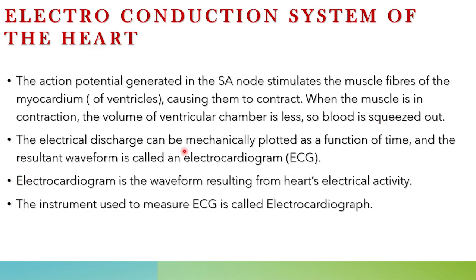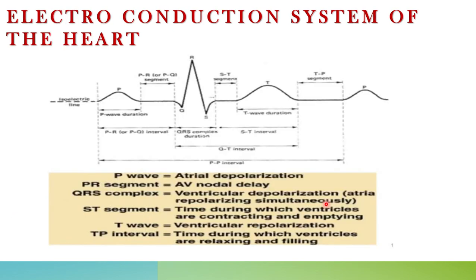The electrical discharge can be plotted as a function of time, and the resultant waveform is called an electrocardiogram. The instrument used to measure ECG is called an electrocardiograph. The electrocardiogram is the waveform resulting from the heart's electrical activity.